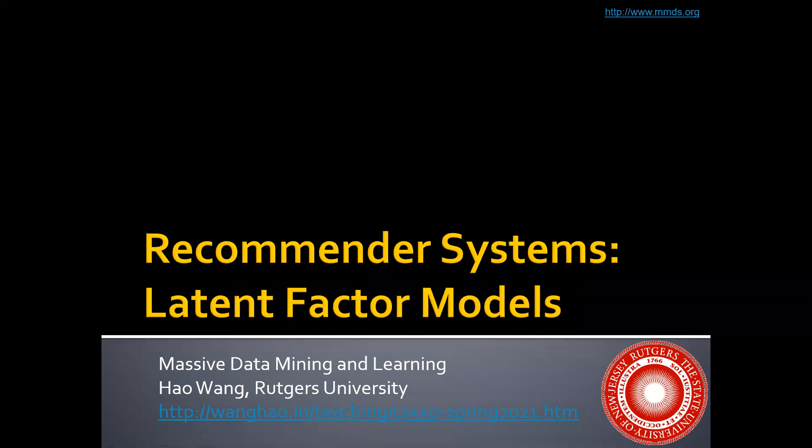Until now, we have talked about the first two approaches for recommender systems, which are content-based approach and collaborative filtering. Next, let's turn to the third approach, latent factor models, and this is a machine learning based approach.